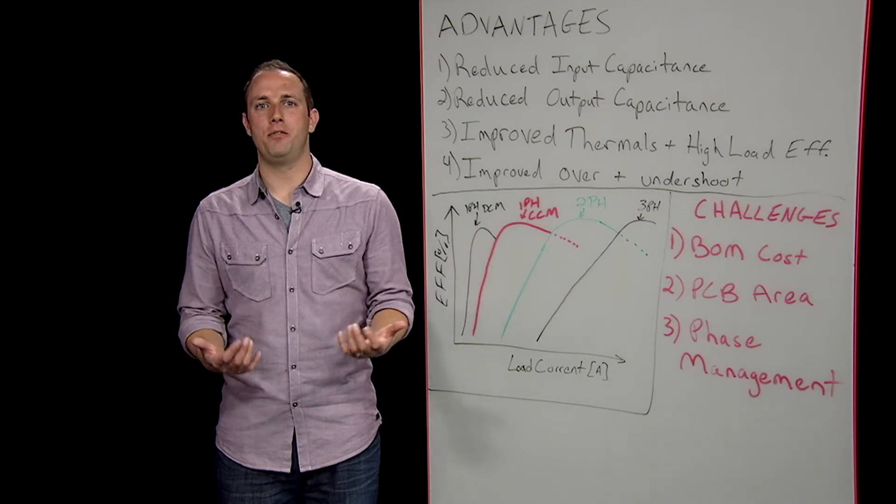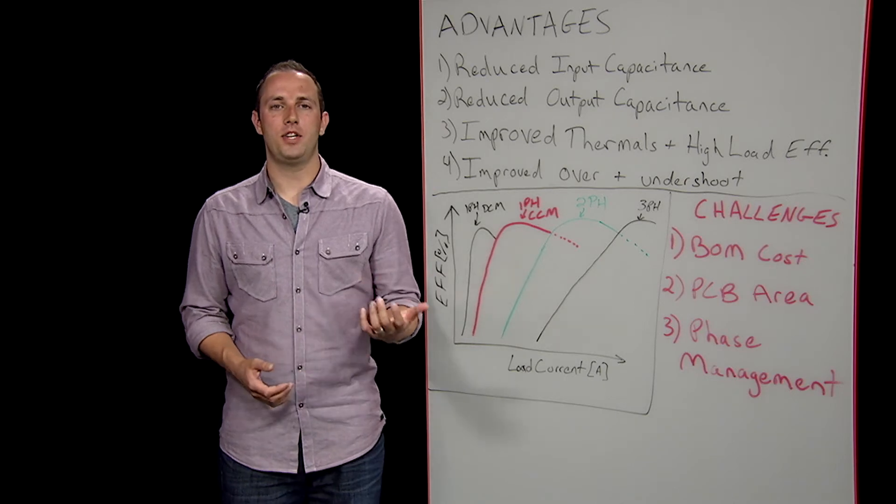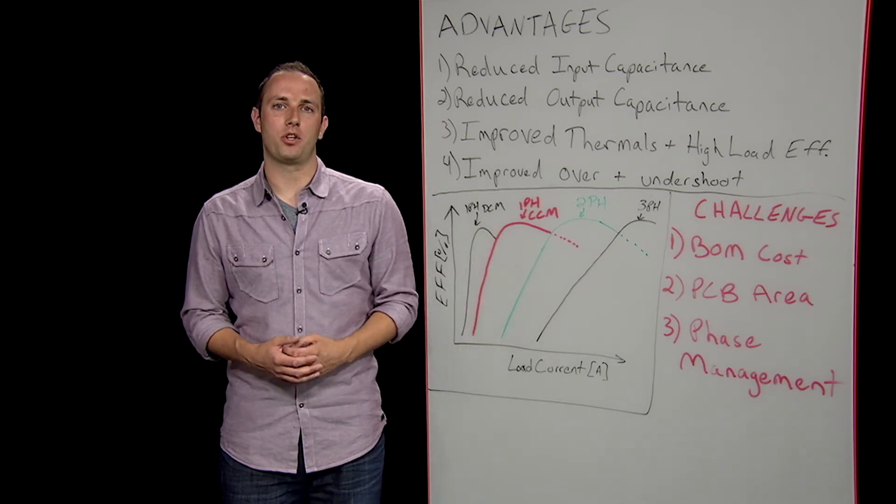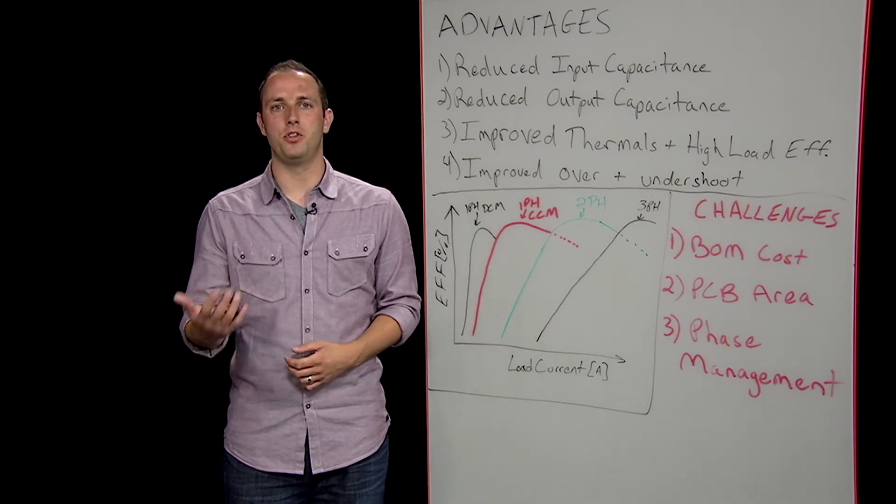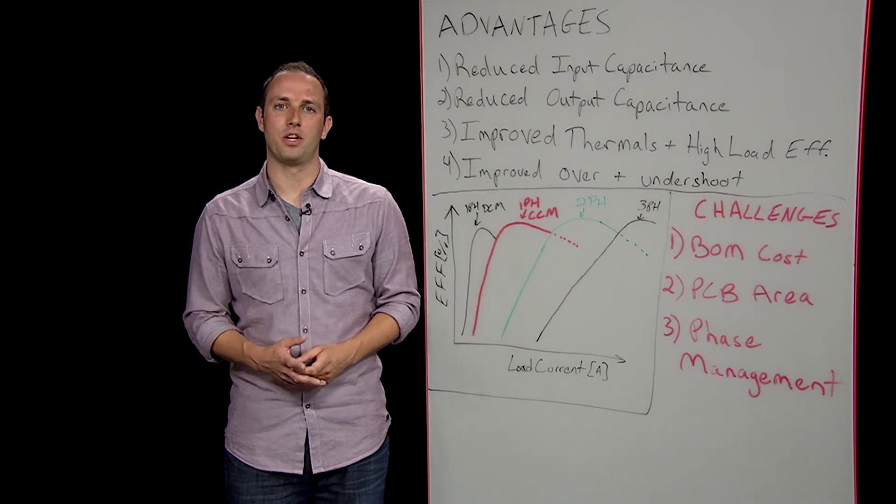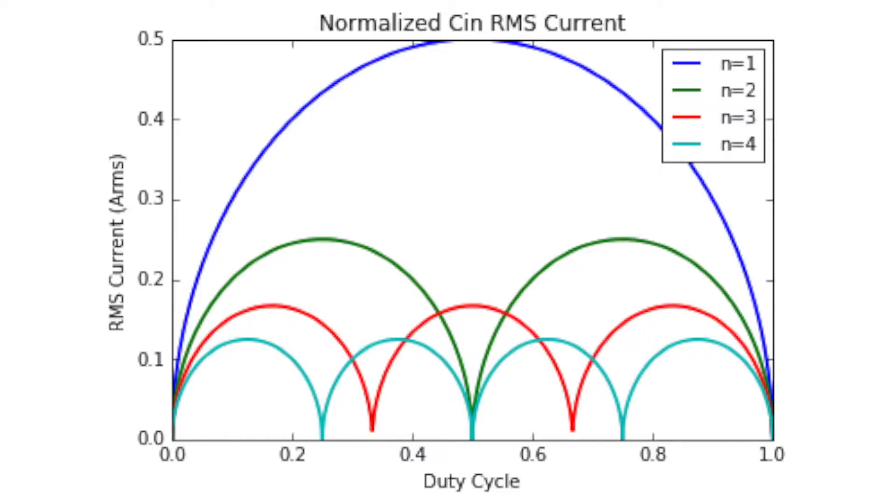Just how much benefit do you get from adding more phases to a design? Let's take a look at a graph of the normalized RMS current flowing through the input caps versus the duty cycle of the regulator as phase count increases. The addition of even one more phase can drop the RMS current by a factor of two or more depending on the duty cycle. At several points on the graph, the RMS current even drops to zero as the individual ripple currents of each phase cancel one another out.